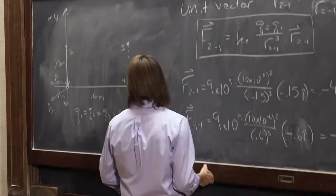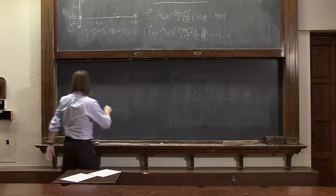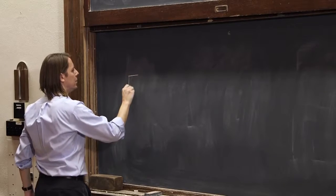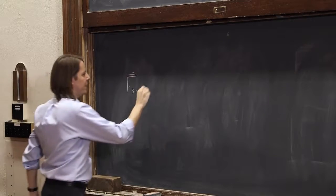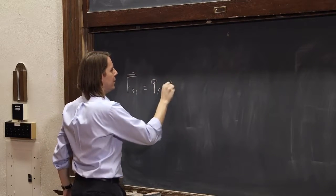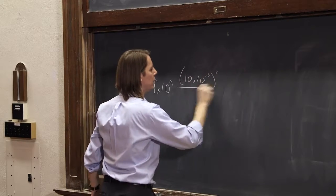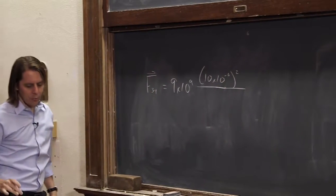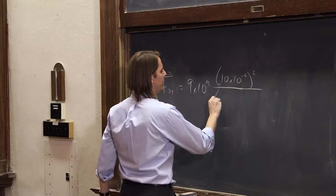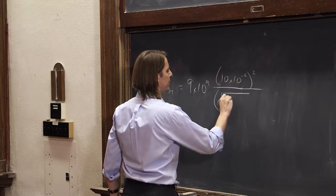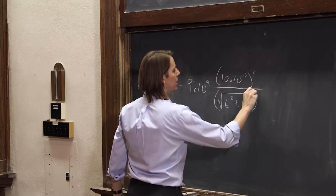Okay. Let's do one more part. Let's do f 3,1. That was the difficult one anyway. Let's see. f 3,1. That would be ke, 9 times 10 to the 9, 10 times 10 to the minus 6 squared, over the separation. So remember, the separation, it was the square root of 0.6 squared plus 0.15 squared.